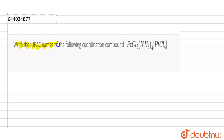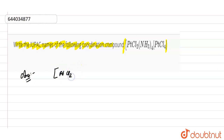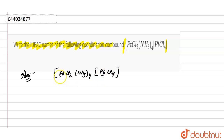The question is to write the IUPAC name of the following coordination compound. The compound is [PtCl₂(NH₃)₄][PtCl₄], where we have platinum with Cl₂, NH₃ (four), and PtCl₄.